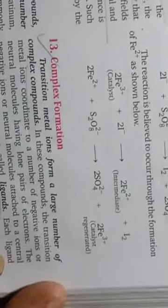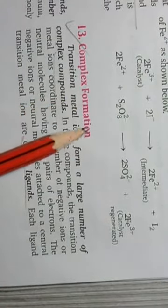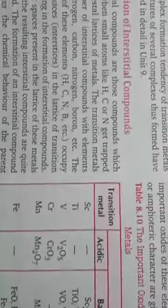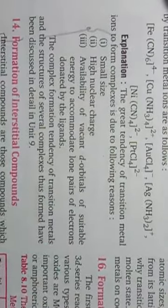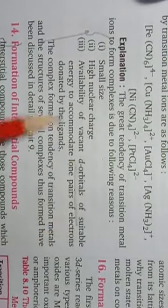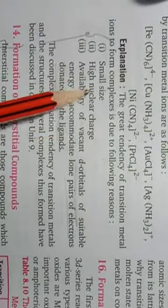The next heading is complex formation, which we have already studied in coordination compounds. Transition metal ions form a large number of complex compounds with electron-donor units known as ligands. The reasons why transition metals form coordination compounds are: small size of the metal ion, high nuclear charge, and availability of vacant d orbitals of suitable energy to accommodate the lone pair of electrons donated by the ligand.